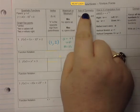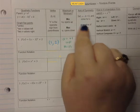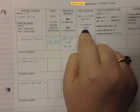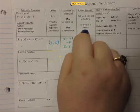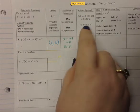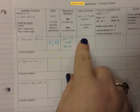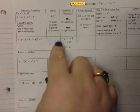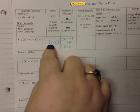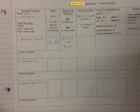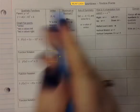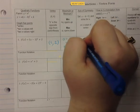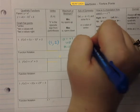Our axis of symmetry comes directly from the information in the equation — it's just the x value of your vertex, always. There's no extra math to do here because it already gives it to you. Our x value of the vertex is 1, so our axis of symmetry is x equals 1. You still have to write it as x equals 1.